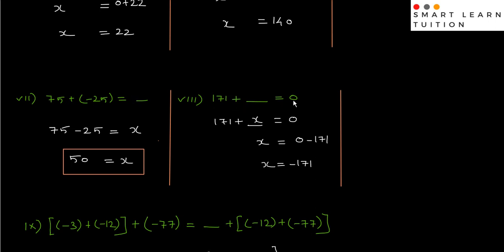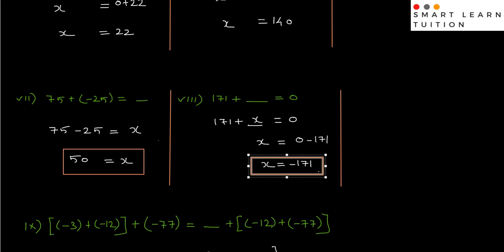Next sum: 171 plus dash equals to 0. Dash is x. So move 171 to the other side. So x equals to 0 minus 171. So x equals to minus 171. This is question number 8, part number 8 in question number 1.